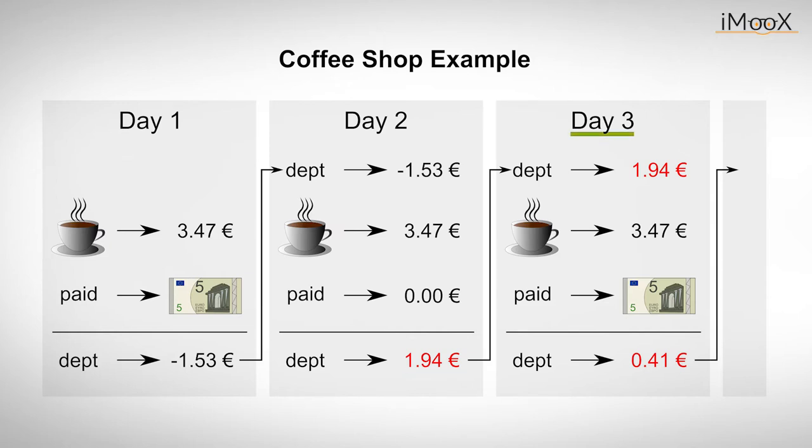The calculation goes on as shown. On the third day, the engineer has to pay 5.41 euros. And, as per their understanding with the shop assistant, he hands over a 5 euro bill. He notes that he still owes the cafe 0.41 euros. This continues every day, endlessly.